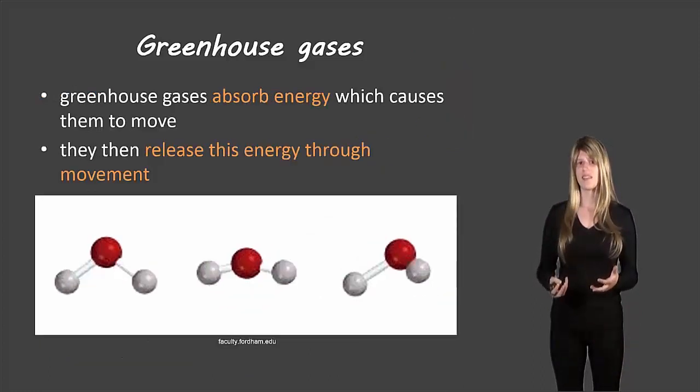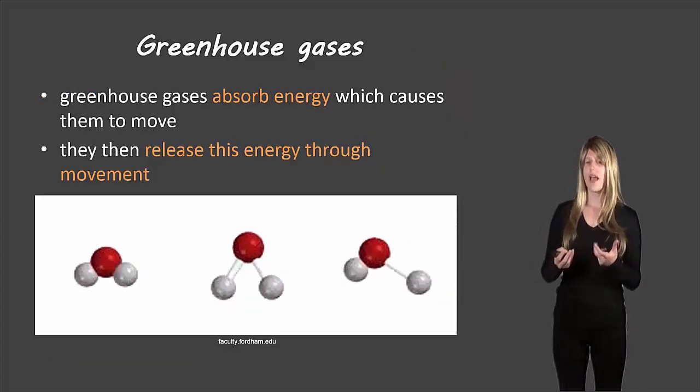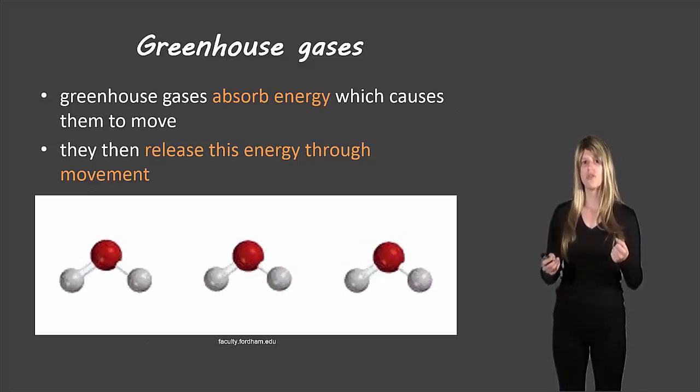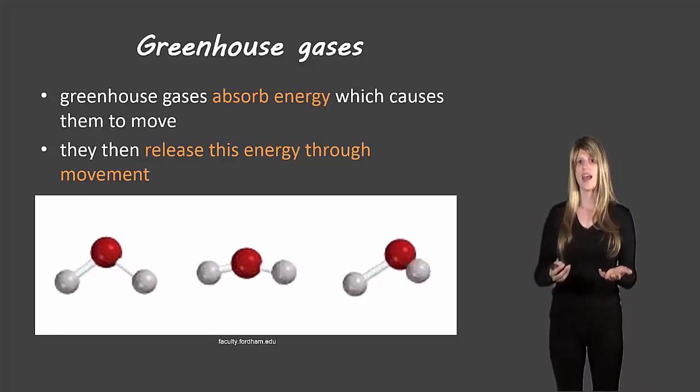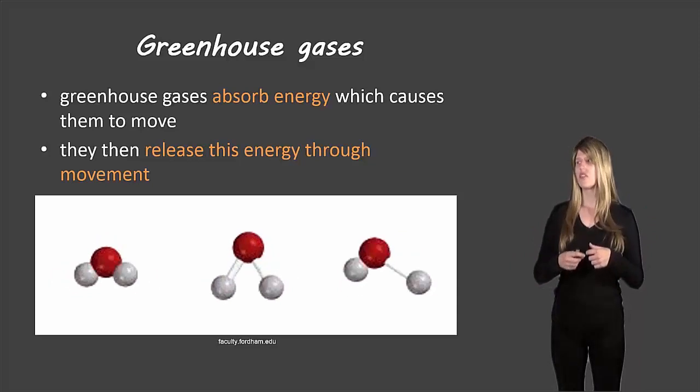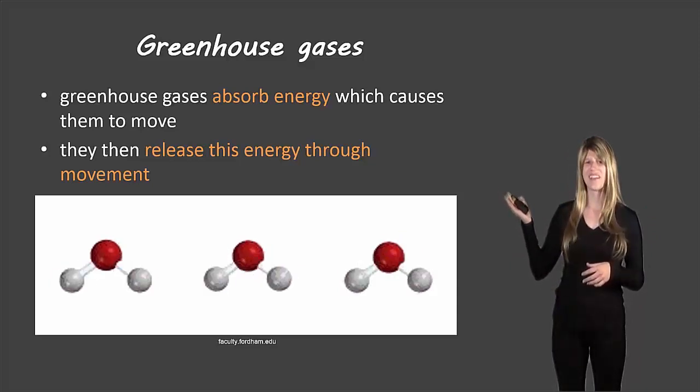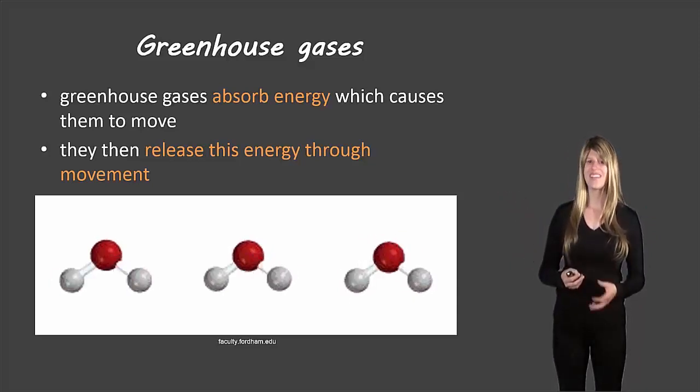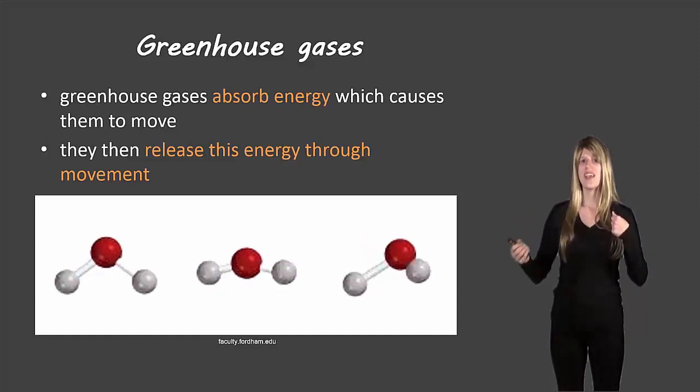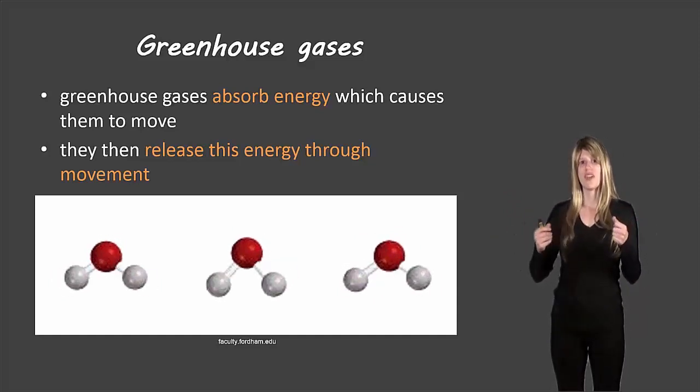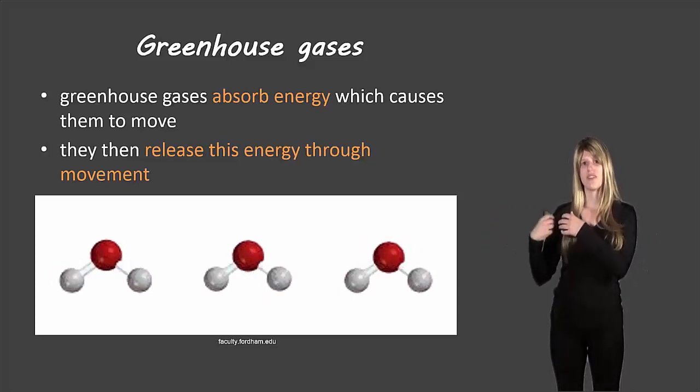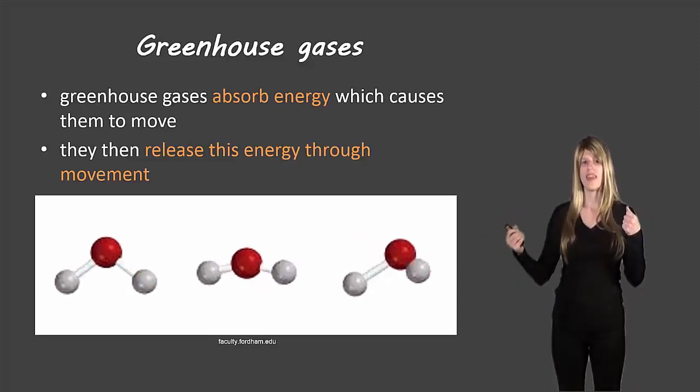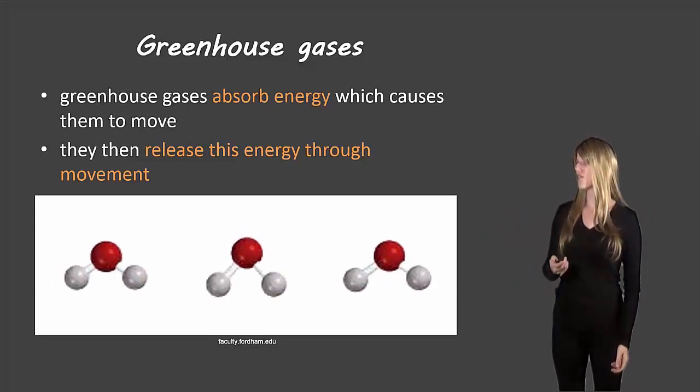So how do greenhouse gases work? Well they absorb energy which causes them to move and then they release that energy through their movement. So you can see from these pictures there, those are all little molecules moving around. So they've absorbed energy. It gives them the ability to move through their bonds between the two different atoms. They can move and then they release that energy through their movements.